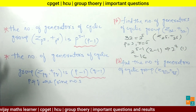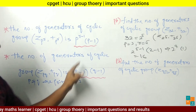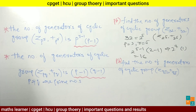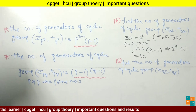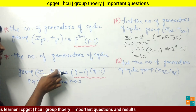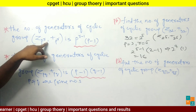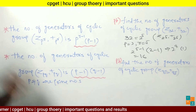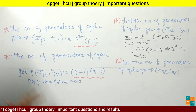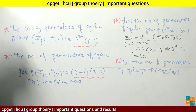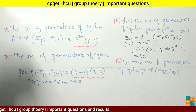Remember, this is the most important result. Now see the second result: the number of generators of a cyclic group when the group is in the form ZPQ with addition modulo PQ, where P and Q are both prime numbers. The formula to find the number of generators is (P minus 1) into (Q minus 1).